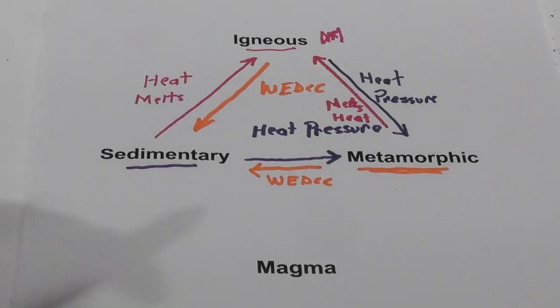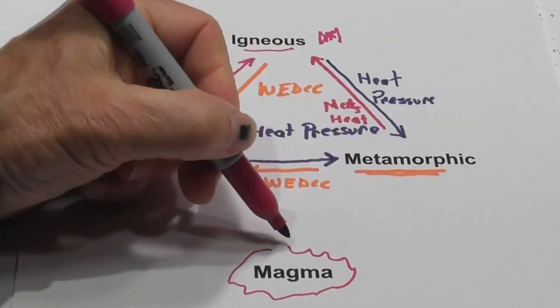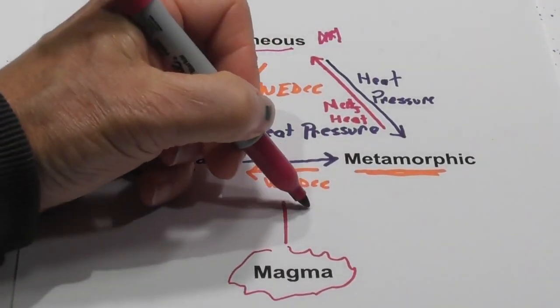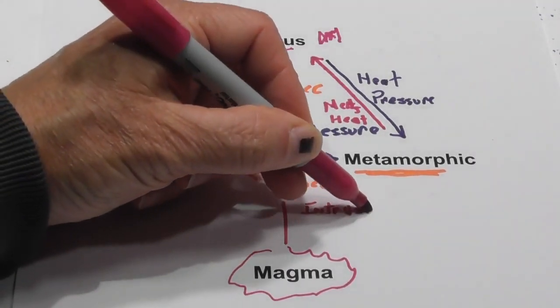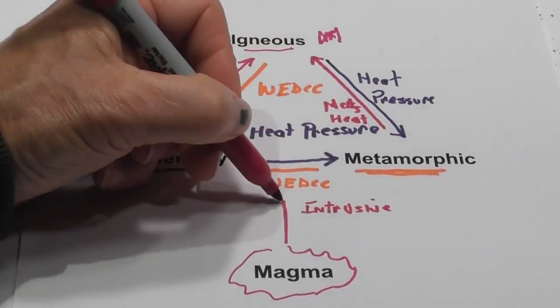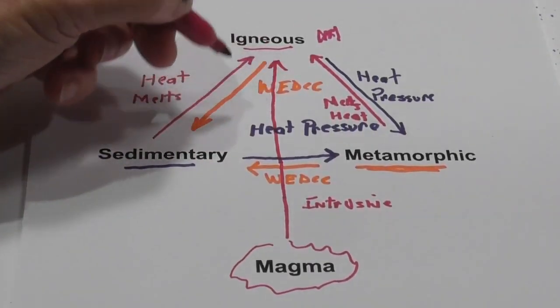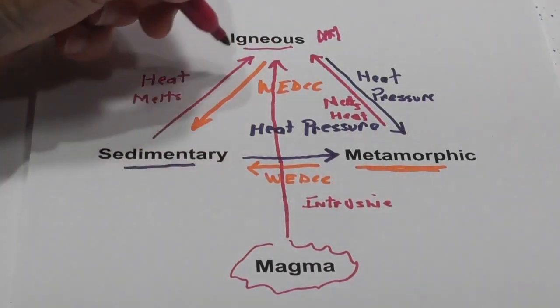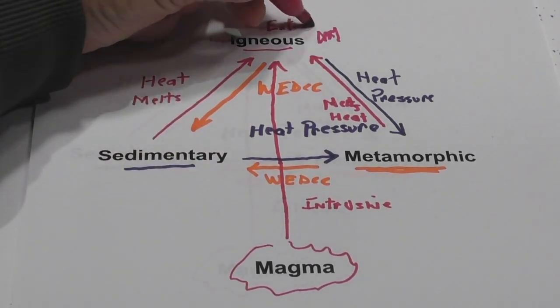And then we have magma, which is molten rock underground. And sometimes it will cool and create an intrusive igneous rock underground. And then sometimes it goes to the surface by uplifting. And that creates an extrusive igneous rock.